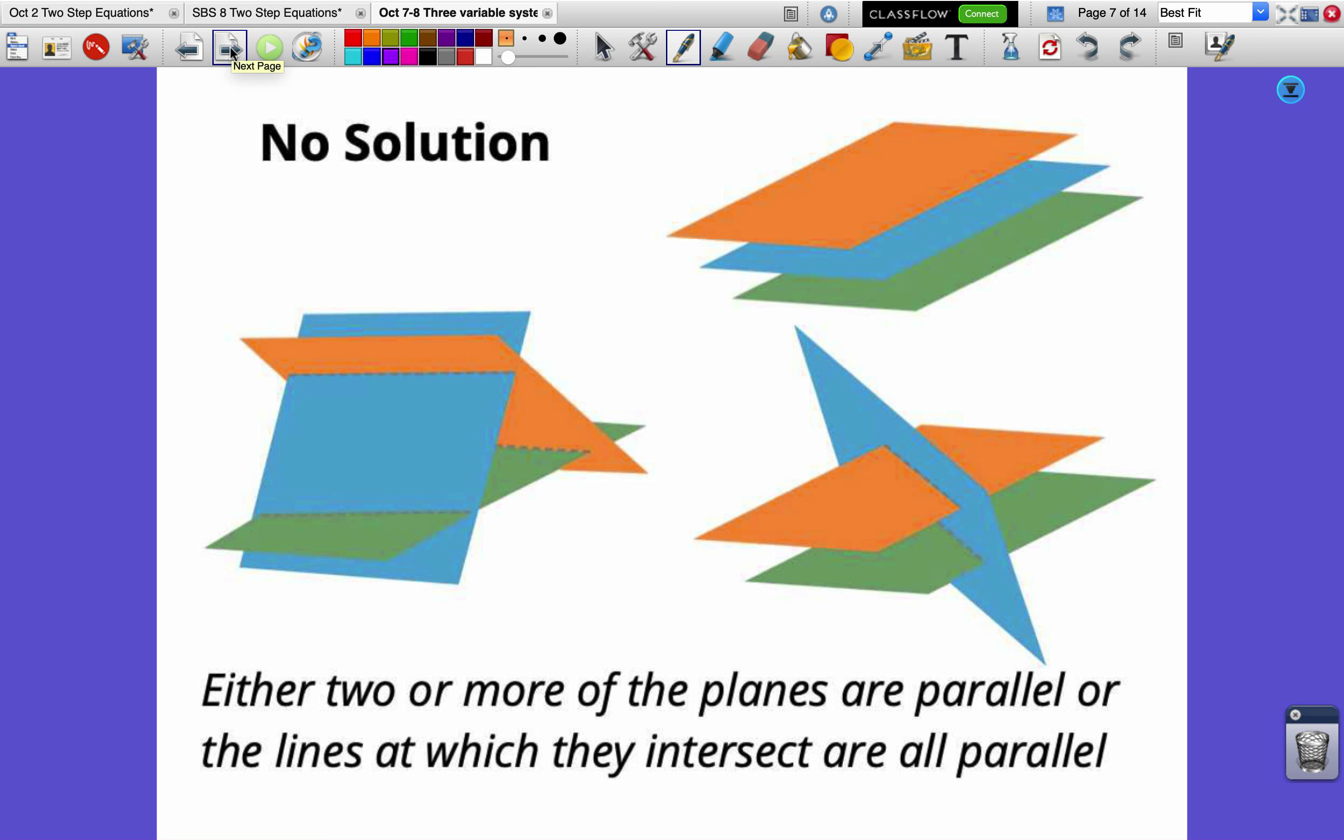All right, now here's three different ways we can get no solutions. And here's what you should write down for no solutions. Either two or more of the planes are parallel or the lines at which they intersect are parallel, which is this example here. So parallel still has a meaning in three-dimensional space. It just means that the planes always stay the same distance apart. If you measure the distance to the closest point on the next plane, it's never changing here. So these are still parallel. They don't have the same slope because slope isn't really a thing in three-dimensional space, but they have a constant distance between them.